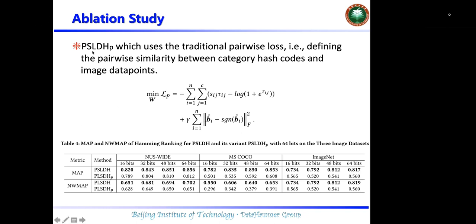We use a proposed variant of our method called PSLDHP, which uses the traditional pairwise loss as the objective function. To construct this objective function, we need to first define the pairwise similarity between the category hash code and the image data point.